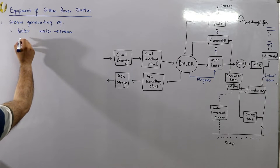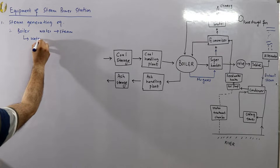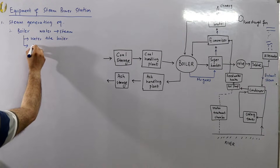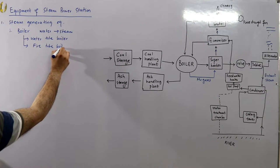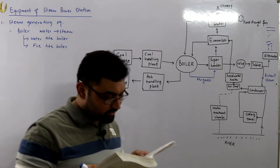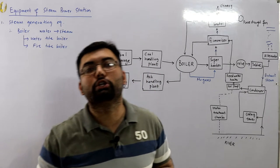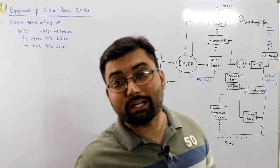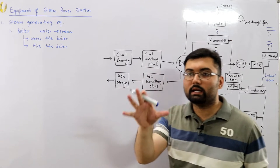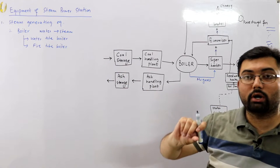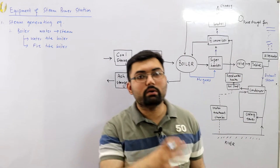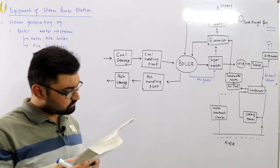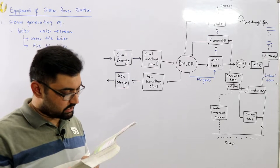In a water tube boiler, water flows through the tubes and is surrounded by heat — similar to the tube construction in air conditioners. In a fire tube boiler, the heat is passed through the tubes and the surrounding chamber contains water, so the water is heated that way. Water tube boilers have a number of advantages over fire tube boilers.